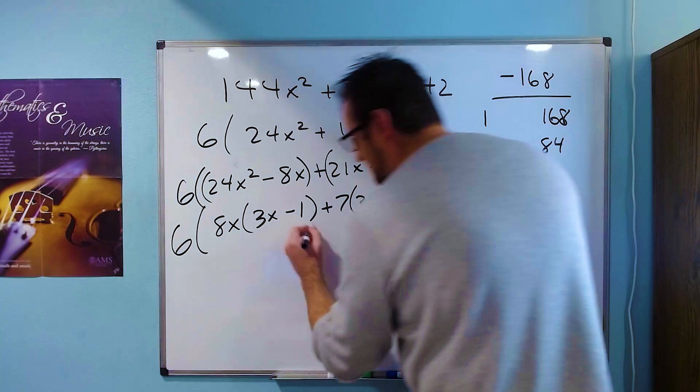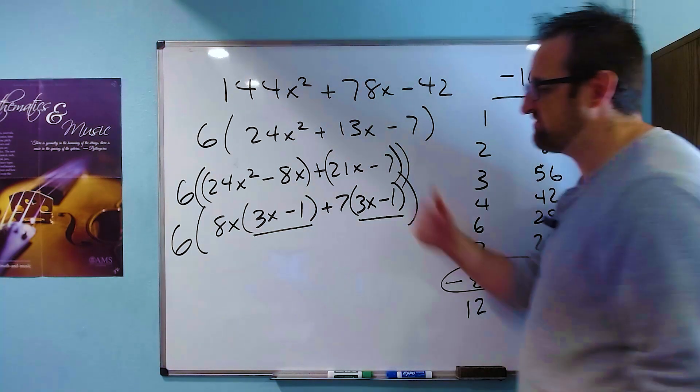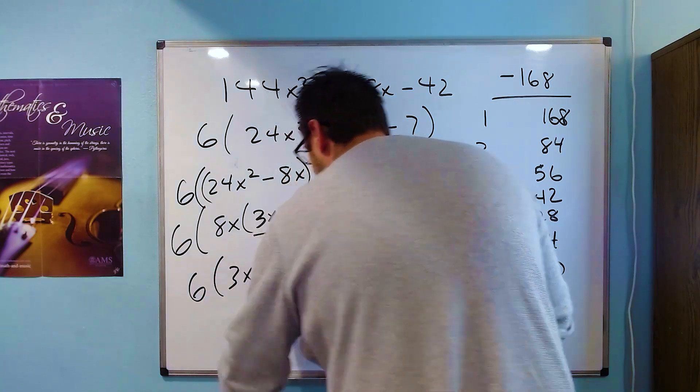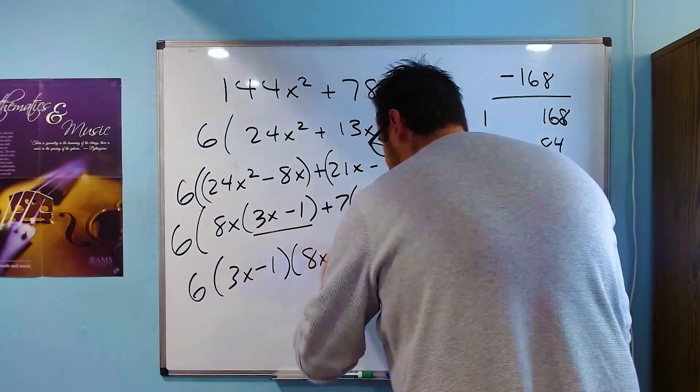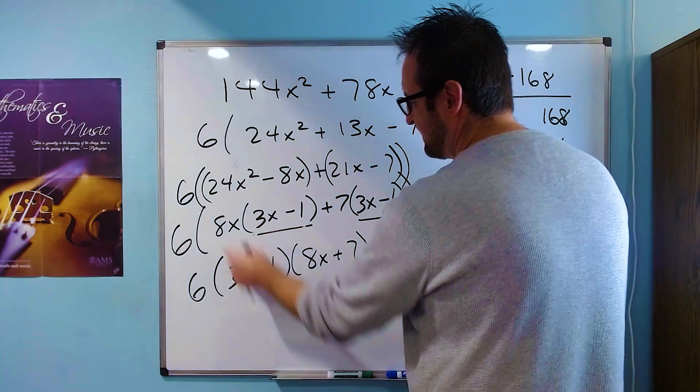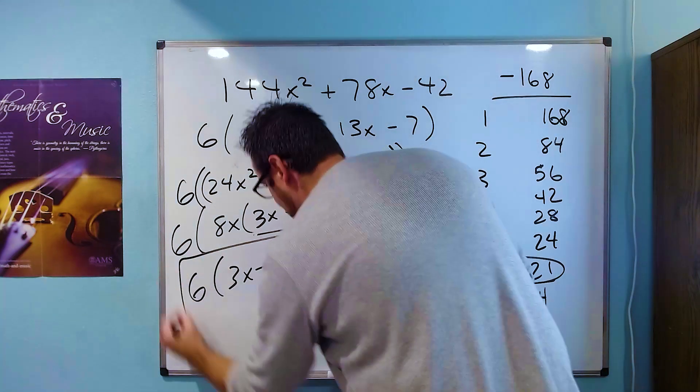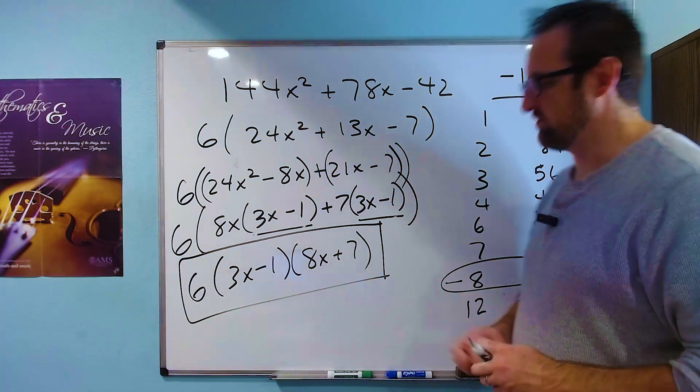And we look and see that the 3x - 1 is shared by both of them. So we can factor that out. We'll have the 6 out in front, and then the 3x - 1, and then the 8x + 7, because this guy divided by that gives me 8x, and this guy divided by that gives me the 7. And that right there is the factored form of this particular problem.